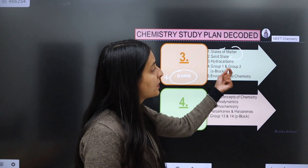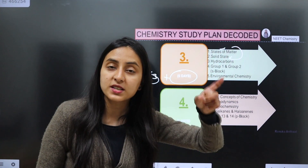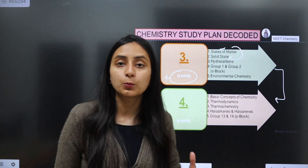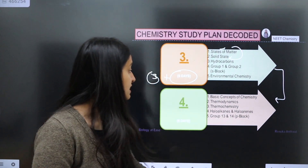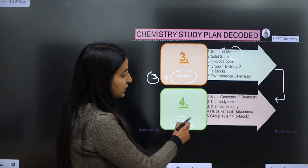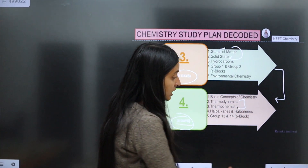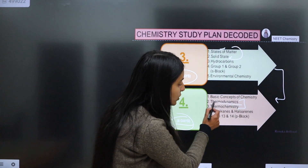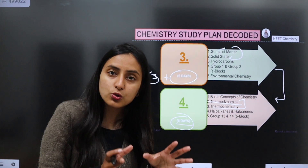When all star-marked topics have been revised, then jump to the next group. Your fourth group is 8 days and covers basic concepts of chemistry, thermodynamics, and thermochemistry. Thermodynamics and thermochemistry are essentially one chapter, but you will treat them as two chapters — first focusing on thermodynamics, and second focusing on enthalpy and thermochemistry, giving each a lot of attention.